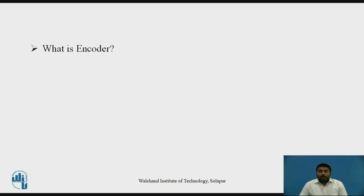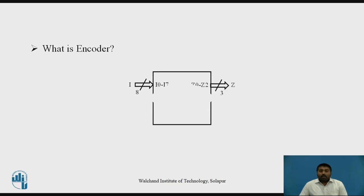If you saw the previous video lectures, we have designed VHDL modules for different combinational circuits and sequential circuits, and in that we covered full adder, half adder, encoder, decoder, and multiplexer, demultiplexer. The encoder is nothing but a device which converts one form to another form — one format to another format — or which maps inputs to a different output format.